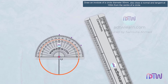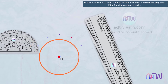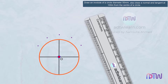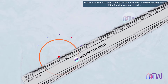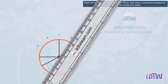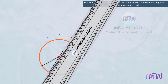After this, using the scale and taking this point as the reference, draw the line from the circumference of the circle to the center, and extend it to the other side of the circumference of the circle. Similarly, do this for all the points.